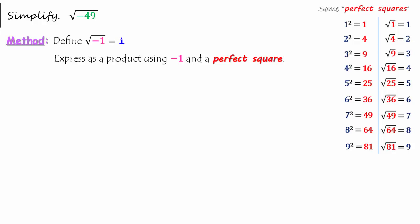Here is a list of the first few perfect squares. We call a number a perfect square if when we take the square root of the number we get a whole number.